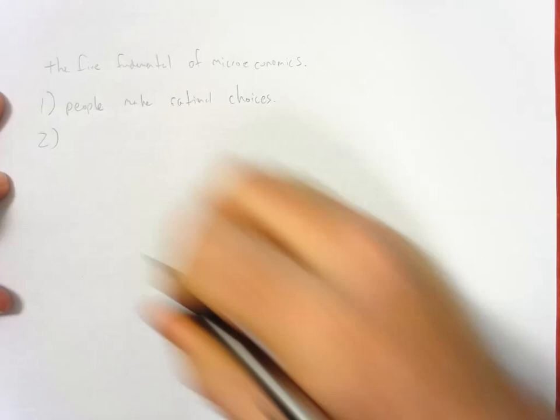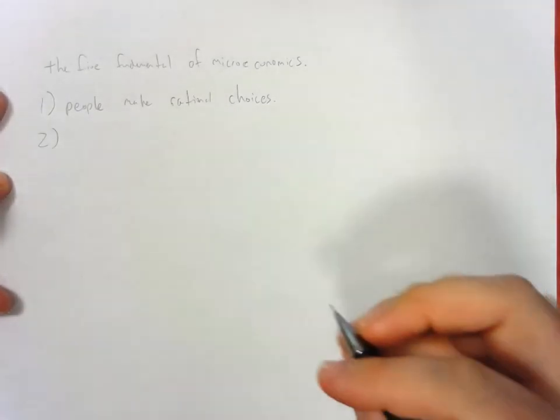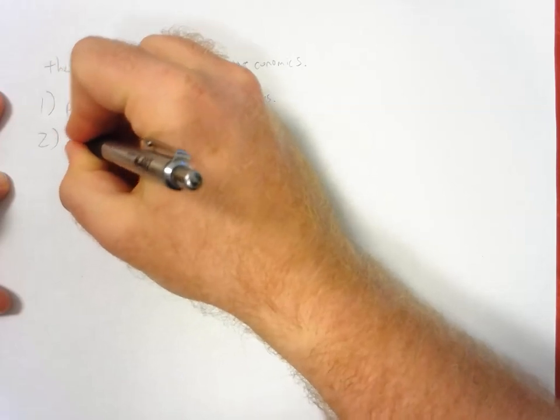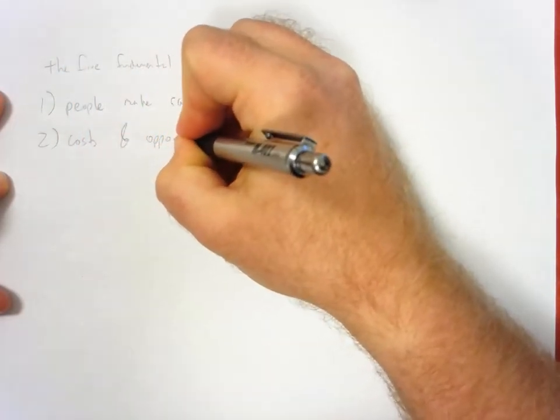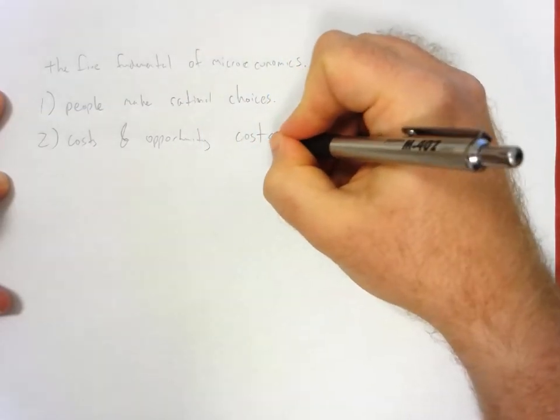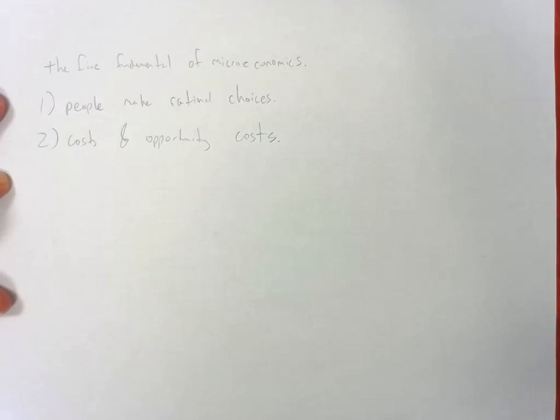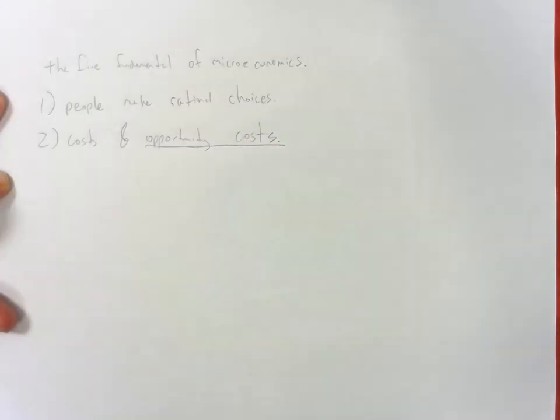You don't see too many people jump out of airplanes without a parachute, for example. Two are costs and opportunity costs. In general, when we talk about costs, we're thinking of costs as a monetary cost. So, you give up money to go to the movies, to buy food, that sort of thing. Well, in economics, we also consider opportunity costs.